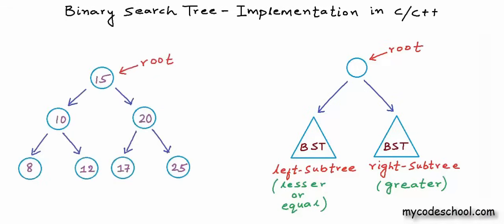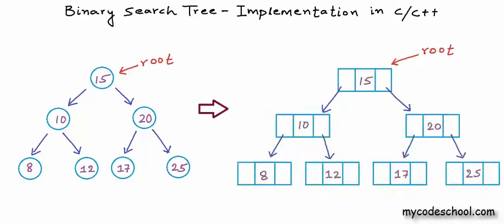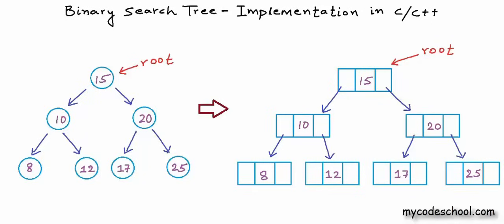I have drawn a binary search tree of integers here. The question is: how can we create this non-linear logical structure in a computer's memory? The most popular way is dynamically created nodes linked to each other using pointers or references, just the way we do it for linked lists. Because in a binary tree each node can have at most two children, we can define a node as an object with three fields: one to store data, another to store the address of the left child, and another for the right child.